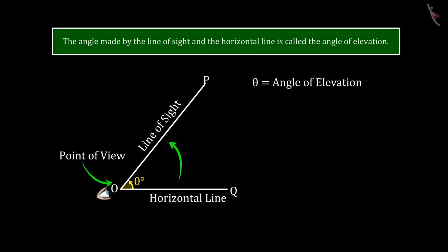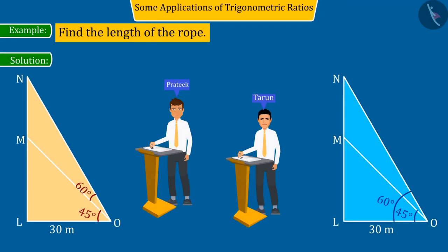We know that the elevation angle is made up of line of sight and horizontal line. Therefore, the correct elevation angle of the fifth floor, angle N, O, L would be equal to 60 degrees.